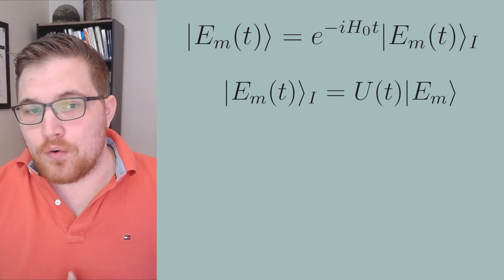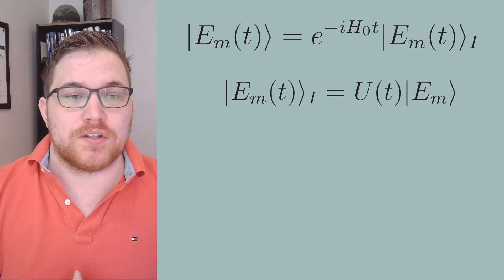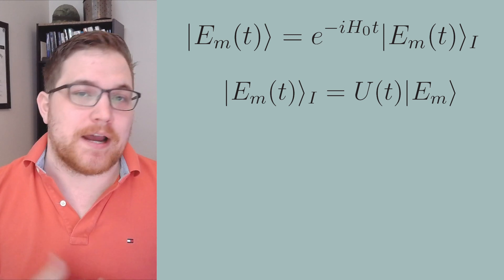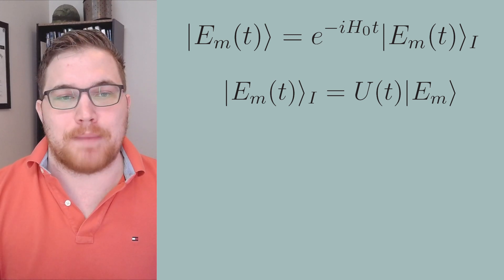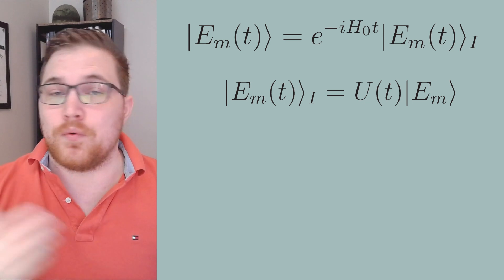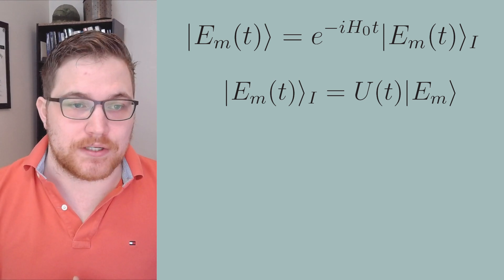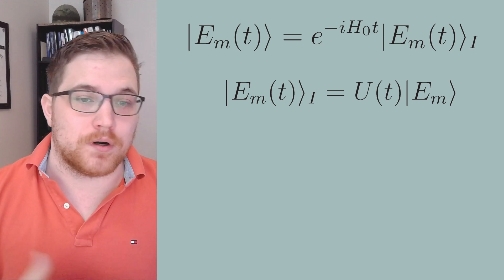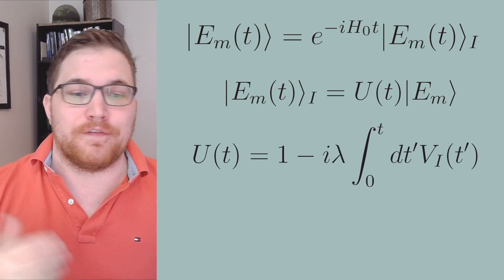but this is just the energy eigenstate of the free Hamiltonian. So we could rewrite this as the following expression. Okay, so now from the video on the interaction picture, we saw that u of t, this time evolution operator could be expanded with the Dyson series. And we will only keep terms in the Dyson series up until the first order.